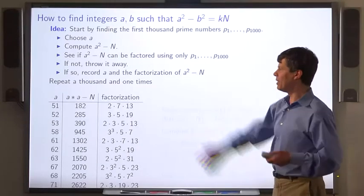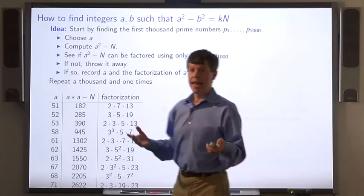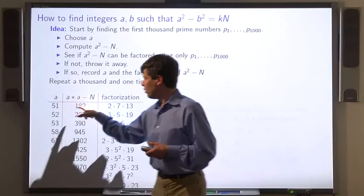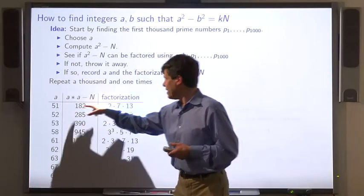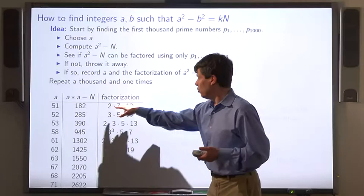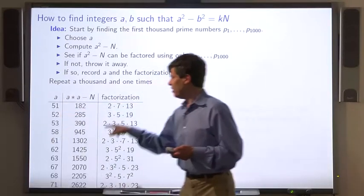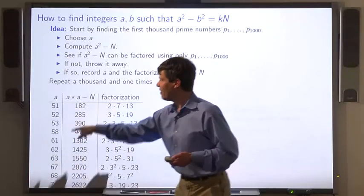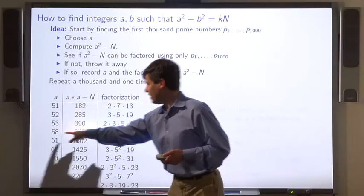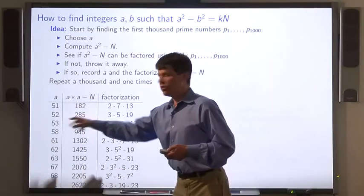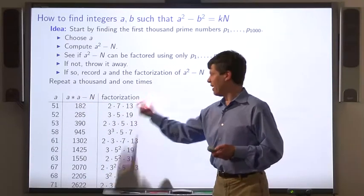We get a table like this. These are the integers a where we succeeded. We took a squared minus n and found that it could be factored using these first few primes. We tried 52, 53, we tried 54 but that didn't work so we went to 58 and so on. So for each of these values of a, we have the factorization of a squared minus n.